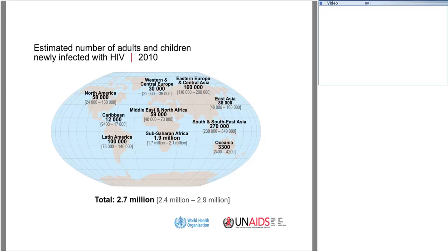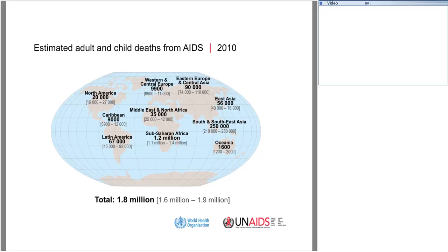Looking at estimated adult and child deaths from AIDS in 2010: North America had about 20,000, while Sub-Saharan Africa had 1.2 million. Eastern Europe and Central Asia had approximately 90,000 estimated deaths, and Southeast Asia had approximately 250,000 deaths from AIDS in 2010.